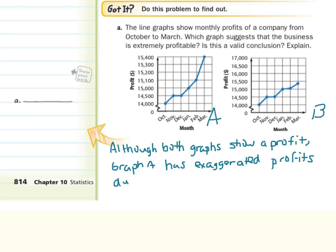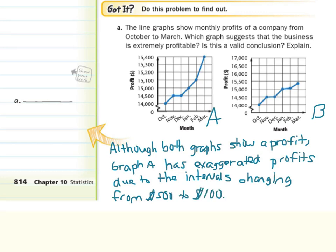It's due to the intervals changing from 500 to 100. You notice in the second graph, we're going up 500 each time. In the first graph we're going up 500, 500, but then 100, 100, 100, 100. There was a change in interval.